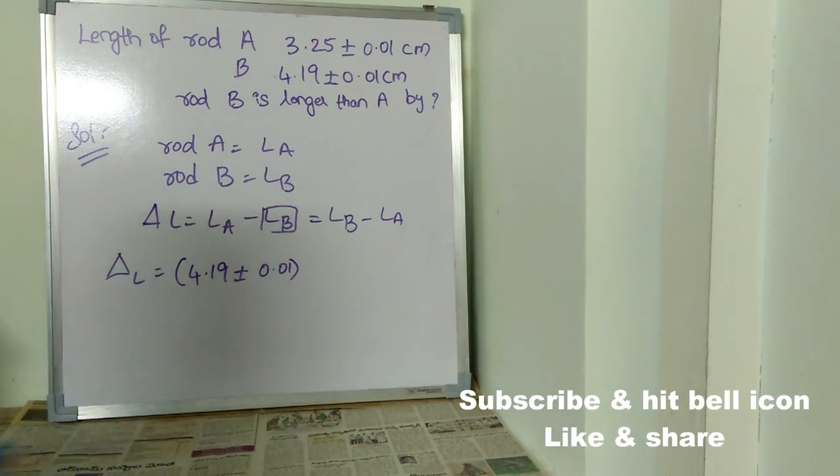Length of rod B is 4.19 plus or minus 0.01 minus the value of La, which is 3.25 plus or minus 0.01. So we just need to solve this equation.